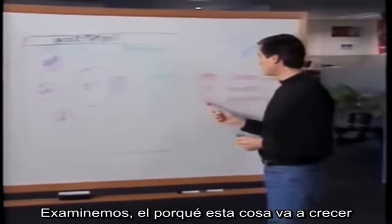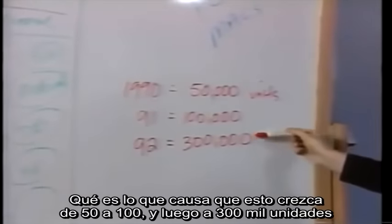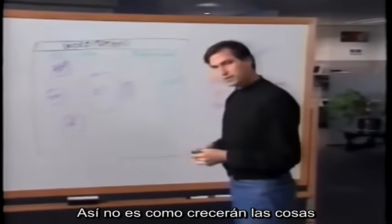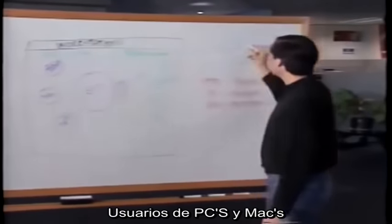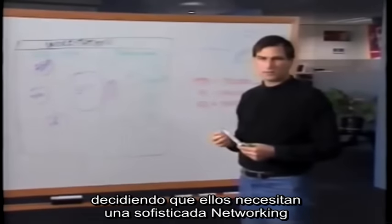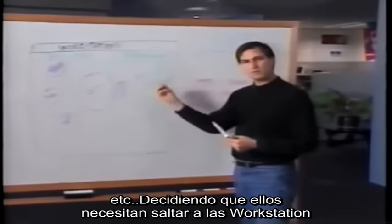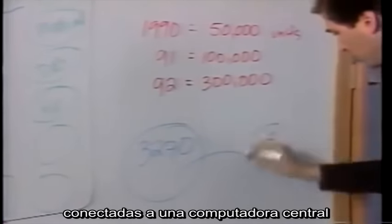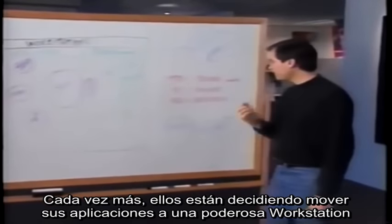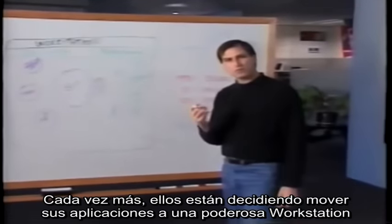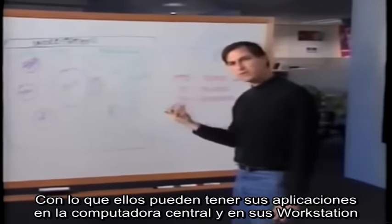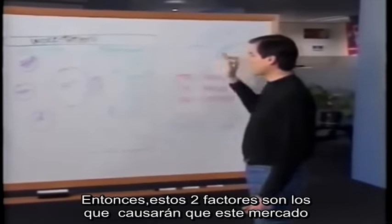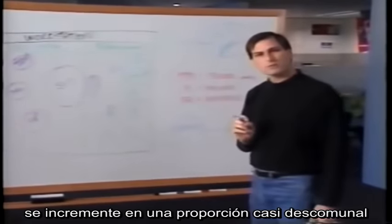Let's examine why this thing is going to grow from 50,000 to 100,000 to 300,000 units. It's going to grow from two factors. Number one, PC and Mac owners deciding they need more sophisticated networking and development environments, stepping up to workstations. And number two, people now using 3270 terminals or terminal emulators hooked up to a mainframe for database-driven applications — they are deciding to move their applications onto a powerful desktop workstation connected via networking to the mainframe, for more rapid development, better user interface, and better economics. These two factors are what's going to cause this market to increase almost an order of magnitude over the next 24 months.